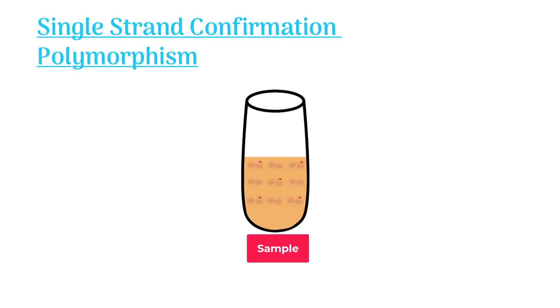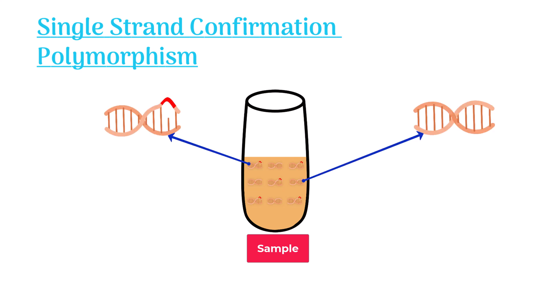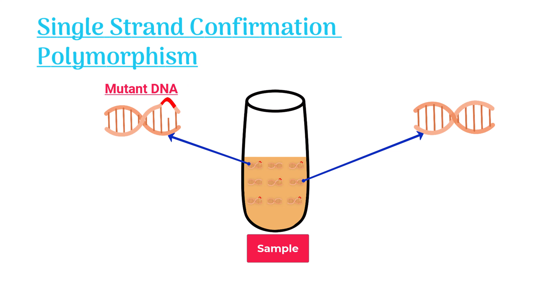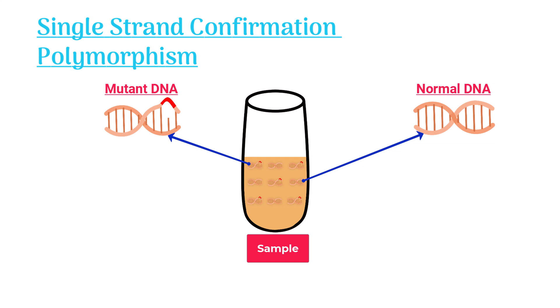Single-strand confirmation polymorphism. In SSCP, we use a sample that contains two types of DNA: DNA with errors called mutant DNA, and DNA without any error known as normal DNA.